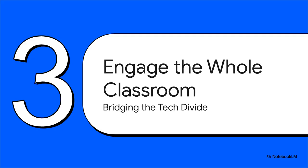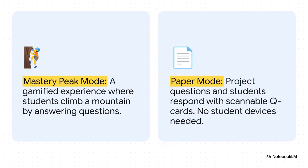So you've made your awesome content in record time — great. But now comes the real challenge: how do you get every single student hooked, especially when you might have all sorts of different tech access levels in one room? This is a really key feature because it addresses that technology divide head on. If you've got a high-tech one-to-one classroom, you can use Mastery Peak — a fun gamified mode where kids climb a mountain by getting answers right. But if you're in a low-tech or even a no-tech classroom, there's paper mode.